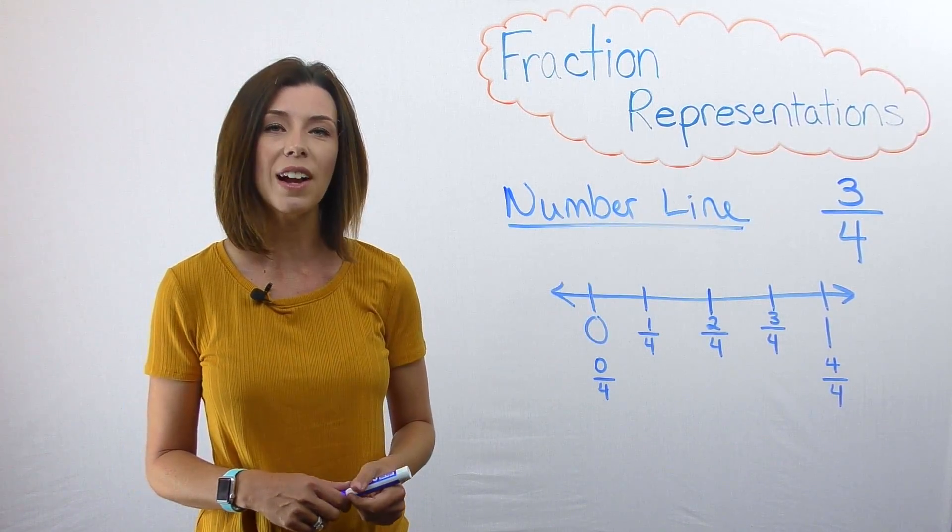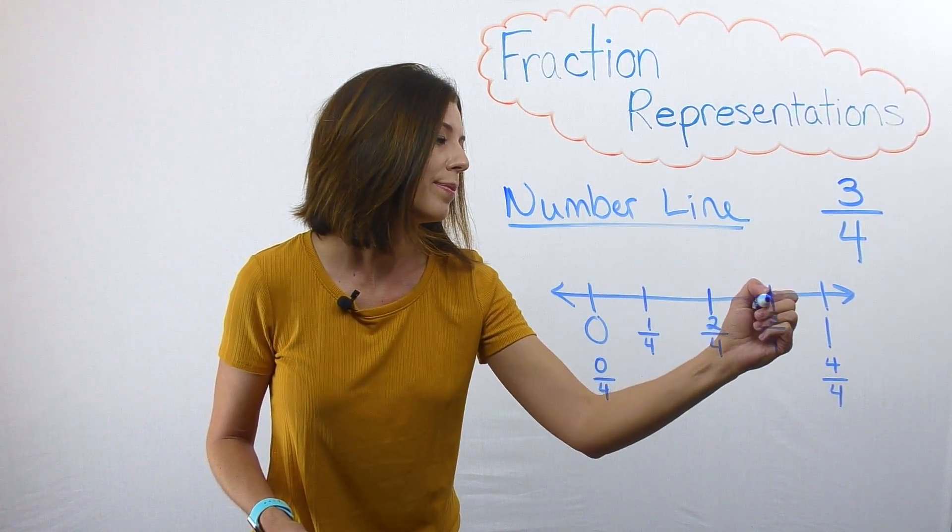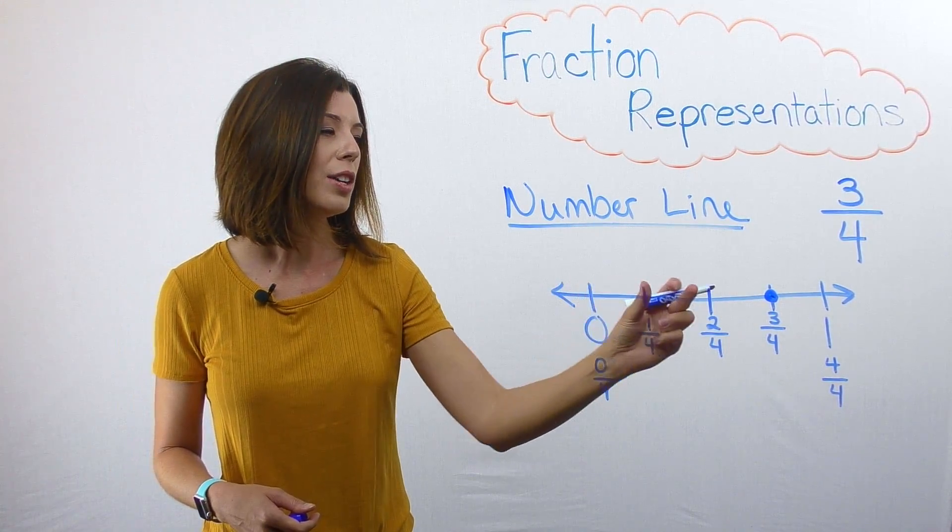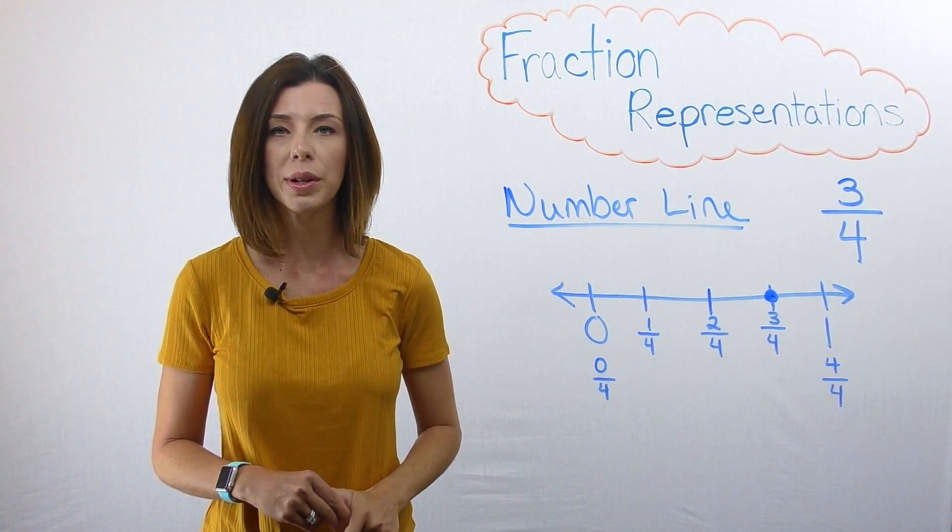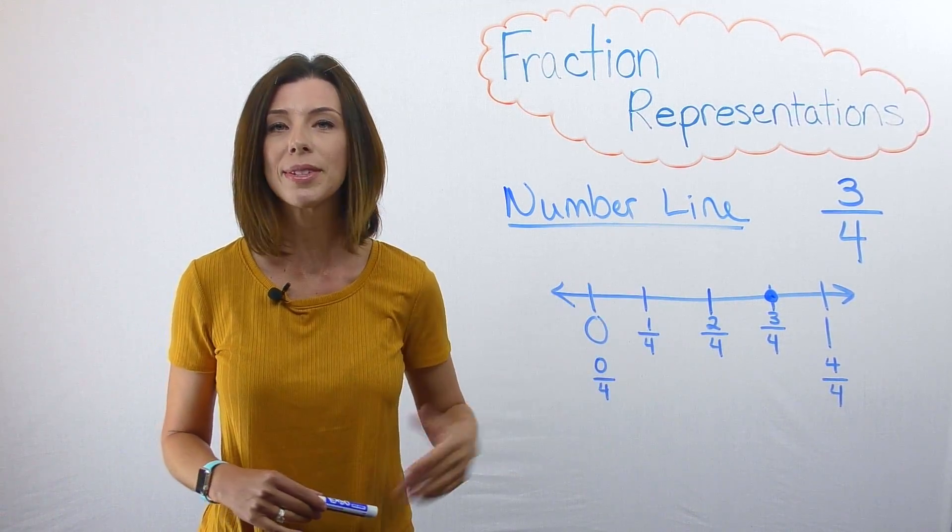I'm going to go ahead and put this fraction on the number line. Again I can see that I have 1, 2, 3 copies of 1/4 which gives me 3/4. I can use a number line to represent that fraction.